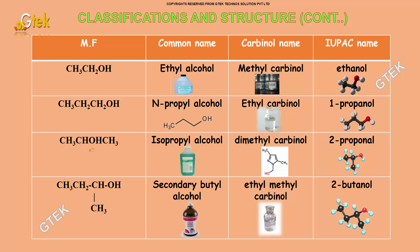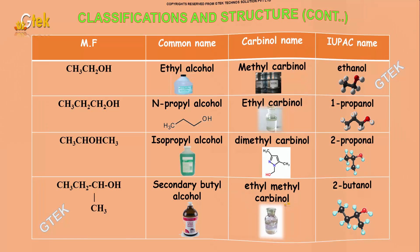The molecular formula CH3CH2CHCH3OH has a common name isopropyl alcohol, carbinol name dimethylcarbinol, and IUPAC name 2-propanol. Similarly, the molecular formula CH3CH2CH3OH has a common name secondary butyl alcohol, carbinol name ethylmethylcarbinol, and IUPAC name 2-butanol.